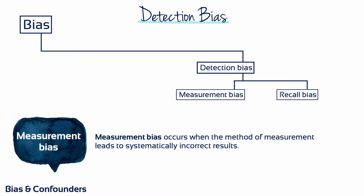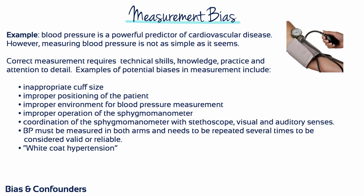Measurement bias occurs when the method of measurement leads to systematically incorrect results. For example, blood pressure levels are powerful predictors of cardiovascular disease. However, multiple studies have shown that taking a blood pressure measurement is not as simple as it seems. Correct measurement requires using appropriate procedures, including using a larger cuff size for overweight and obese adults, positioning the patient so that the upper arm is below the level of the right atrium and the patient does not have to hold up their arm, and taking the measurement in a quiet setting multiple times. If any of these procedures is not done correctly, the resulting measurements are likely to be artificially and systematically elevated.